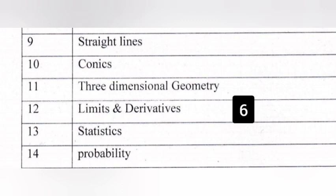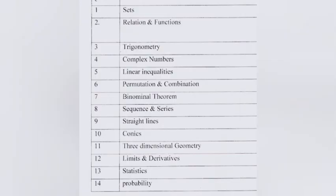Chapter fourteen - Probability, seven marks. Limits and Derivatives carries nine marks. The high-mark chapters are: Relations and Functions, Permutation and Combination, Conics, and Probability — seven marks each.